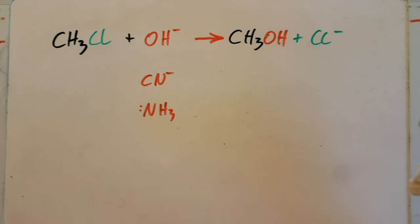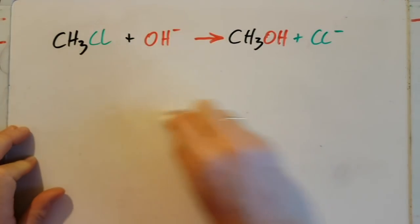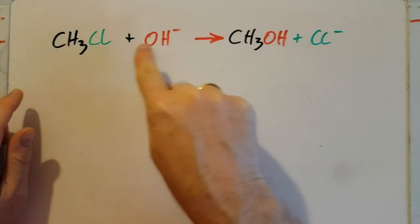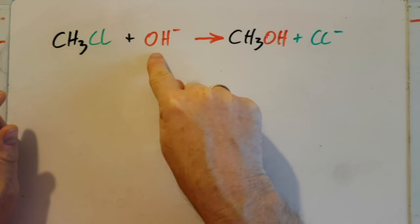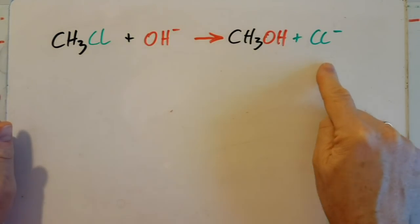But the syllabus says the mechanism isn't needed. So what the hell are you confusing me, Thornley? Well basically, this is what you need to know: haloalkane, the one nucleophile you need to know about is the hydroxide ion, and it makes an alcohol and then the halide ion.